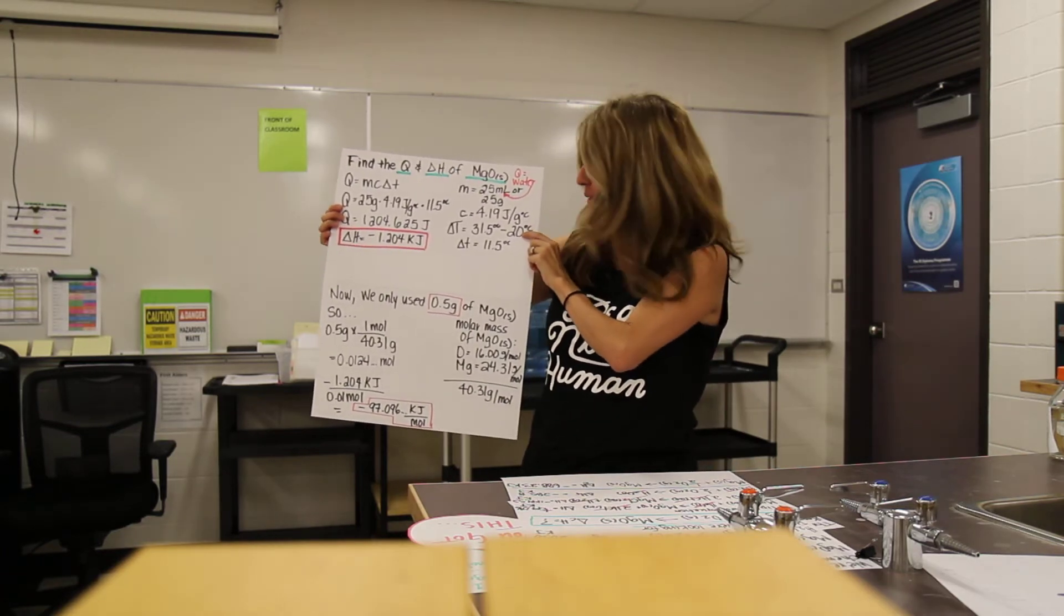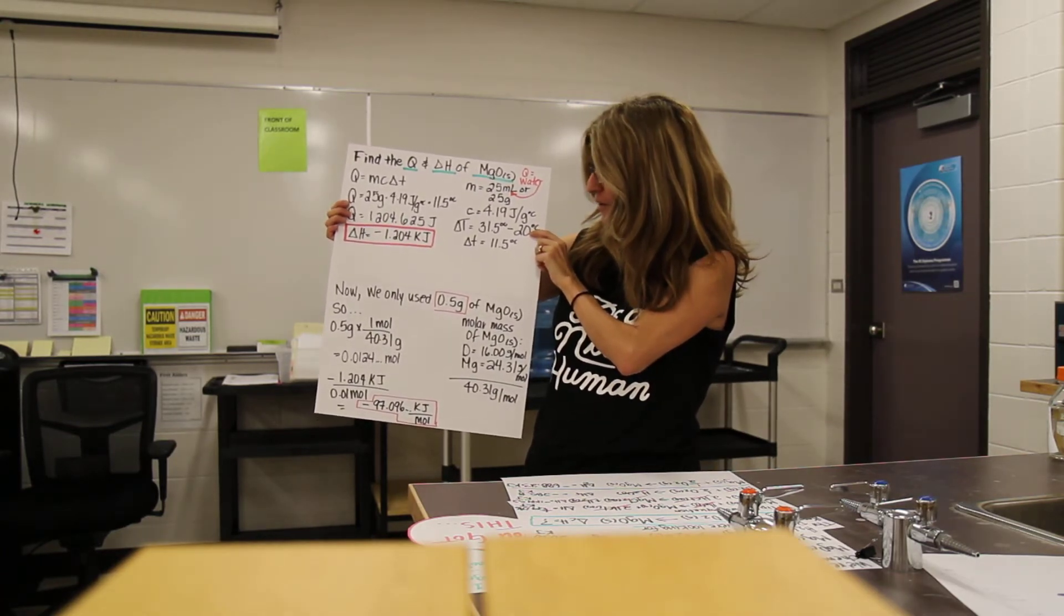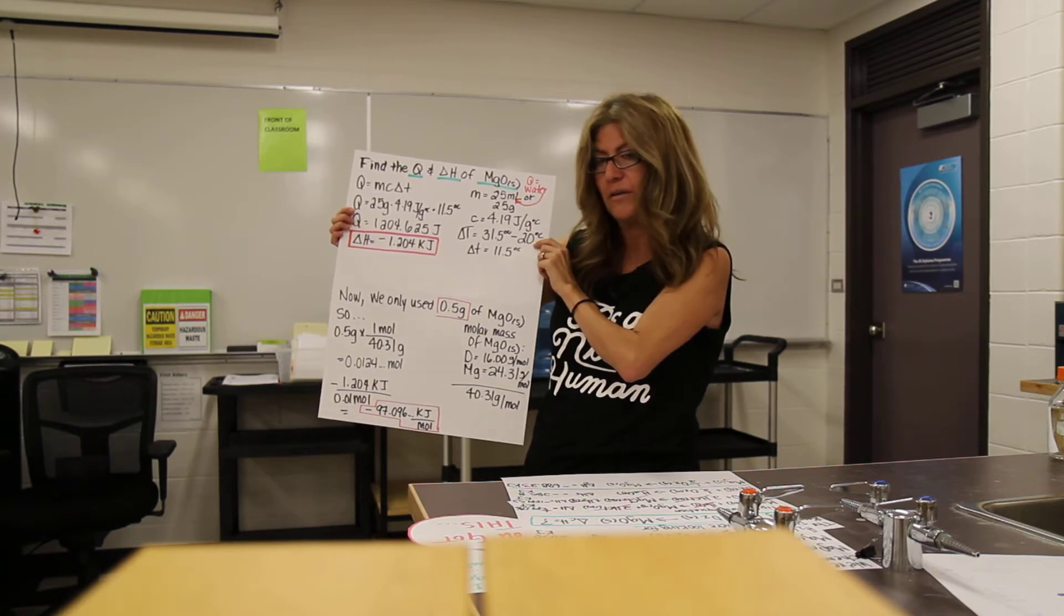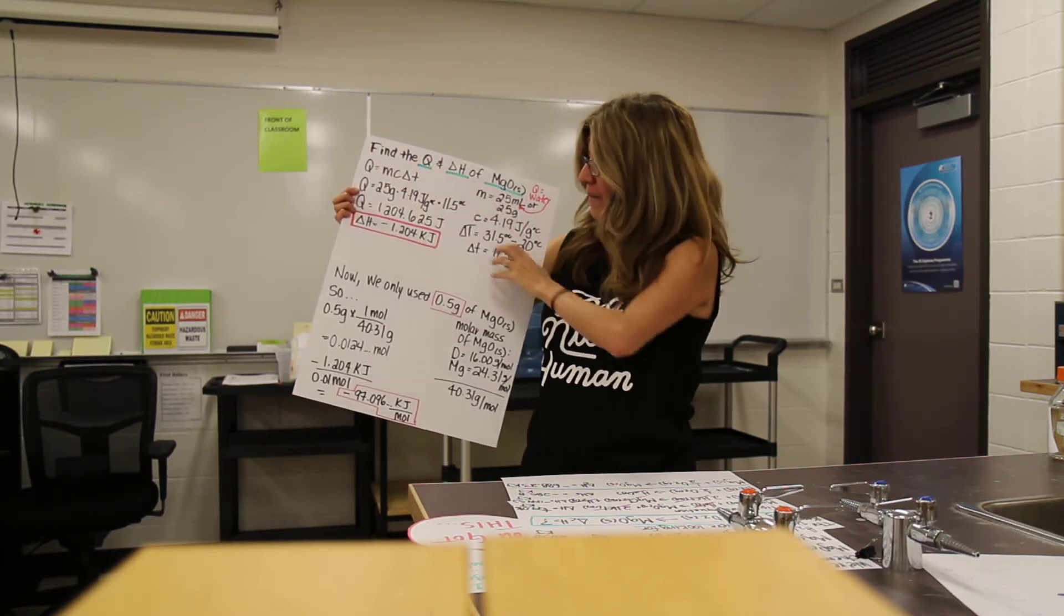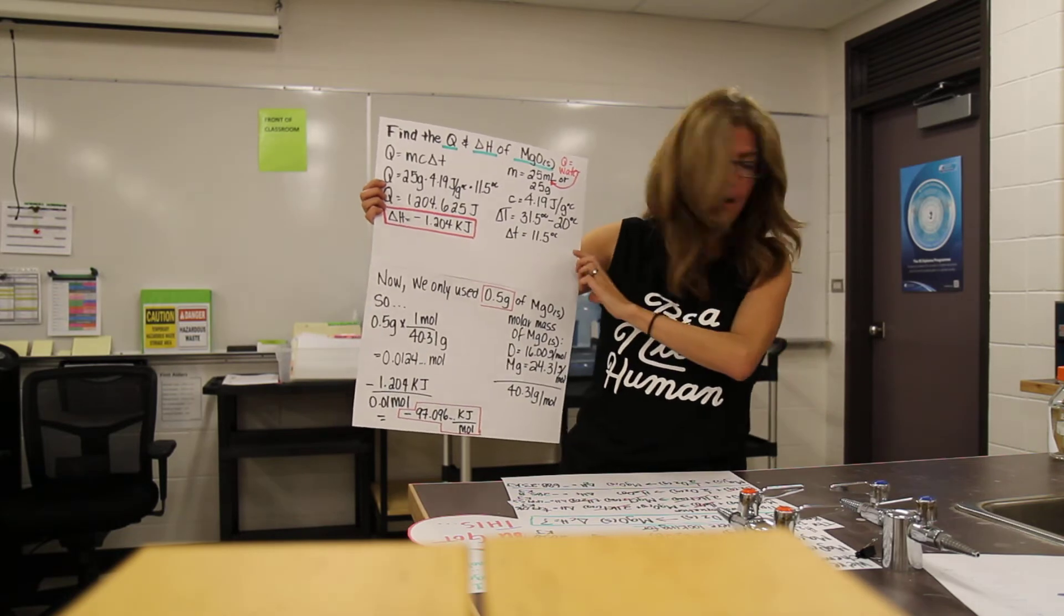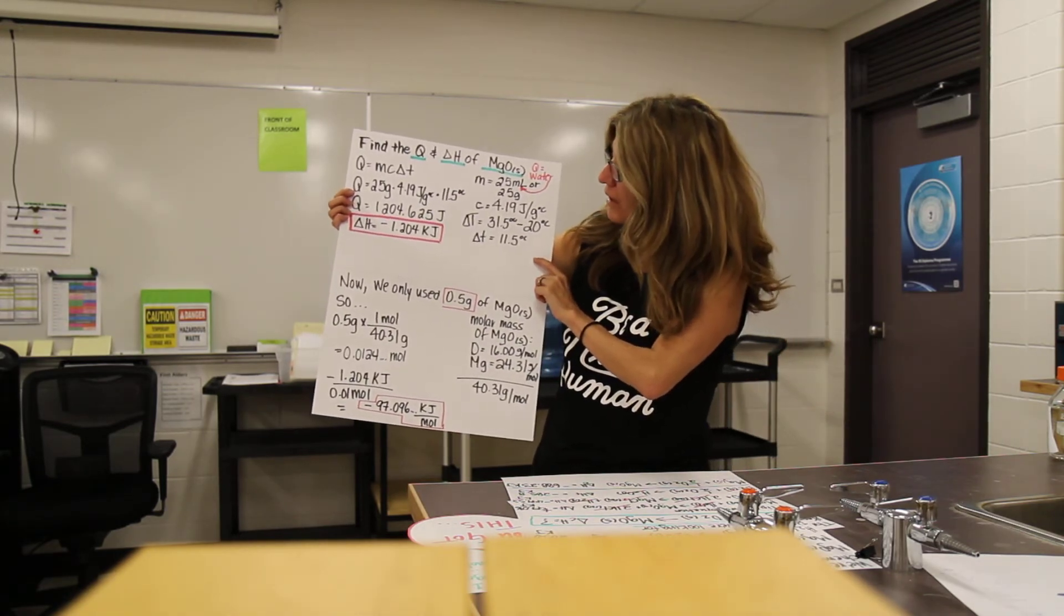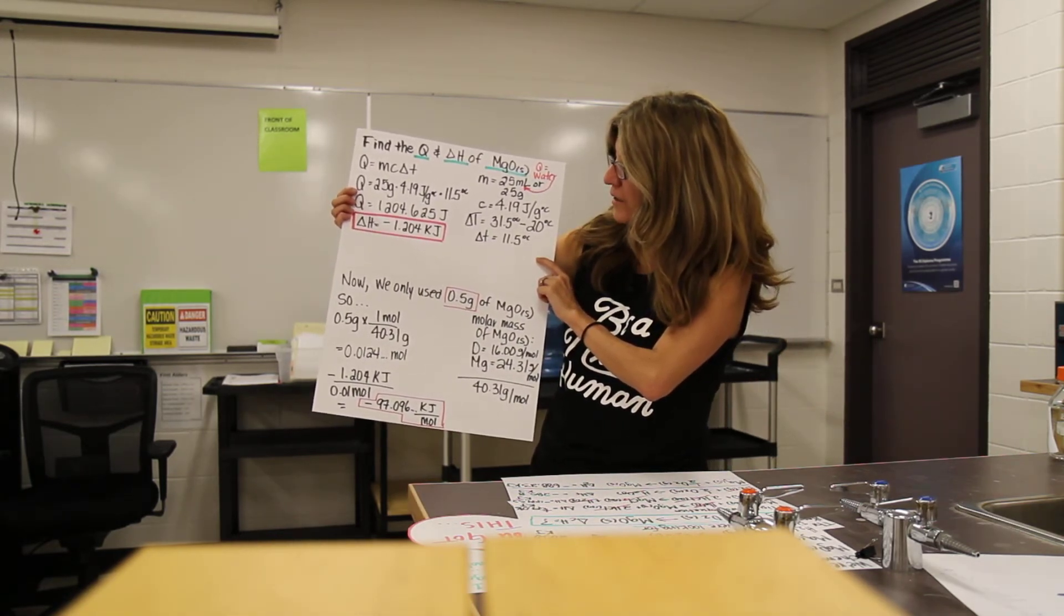So the temperature went from 20 to 31.5 degrees Celsius, which gives us a change in temperature of 11.5 degrees Celsius. So we let our calculator do the magic, right? And we get a Q of 1,204.625 joules.